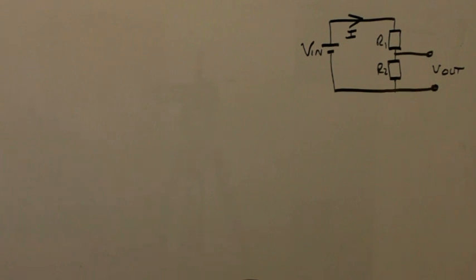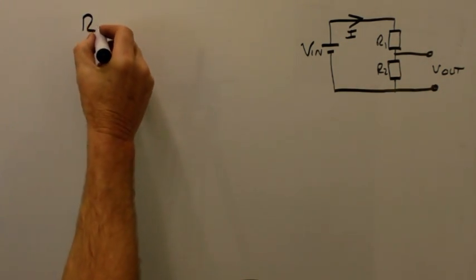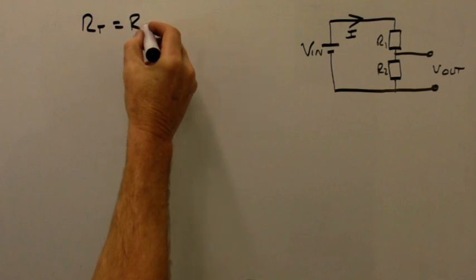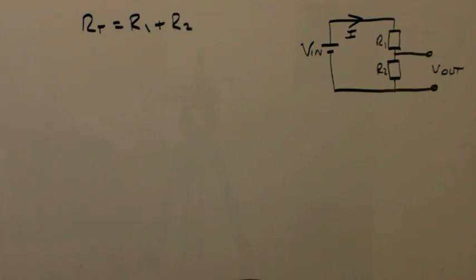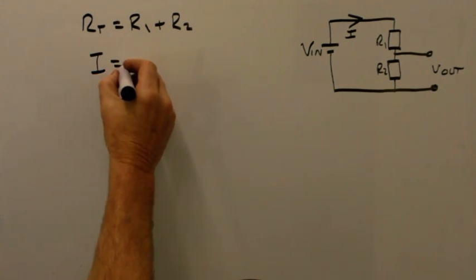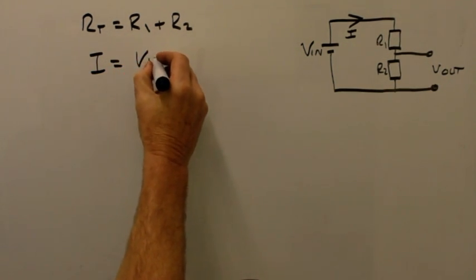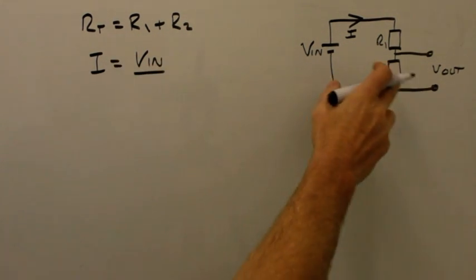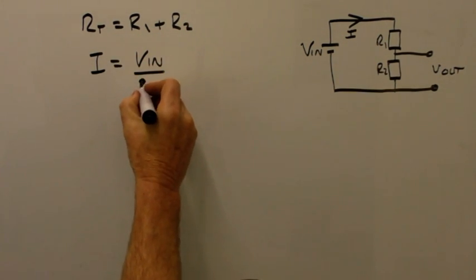First of all, we're going to look at the total resistance. The total resistance of the circuit — as it's a series circuit — Rt is equal to R1 plus R2. The current I in a series circuit is constant through all the components. So if you want to find the value of I, we use Ohm's law. From the diagram, I equals V in divided by the total resistance of the circuit, which is Rt.